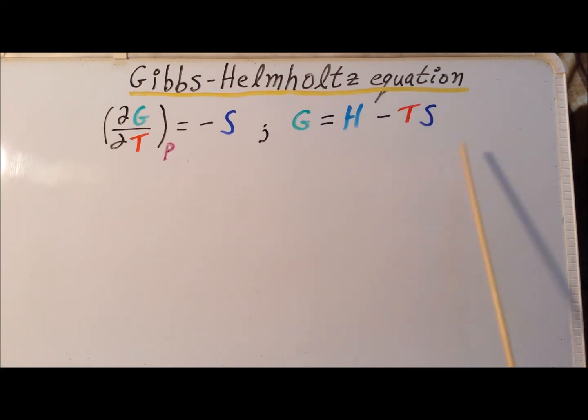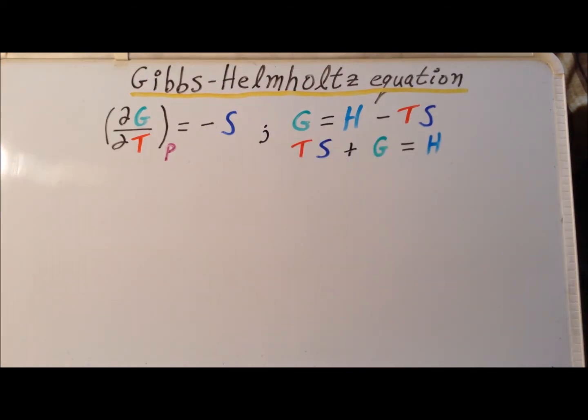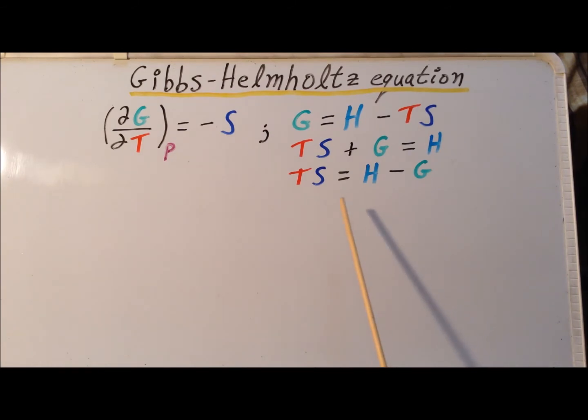Our motivation here will be to rearrange this expression to solve for S. First, we are going to add TS to each side to get that TS plus G is equal to H. Then we subtract G from each side to get that TS is equal to H minus G. Dividing by the temperature T, which is not equal to 0, we get that S is equal to H minus G divided by T.